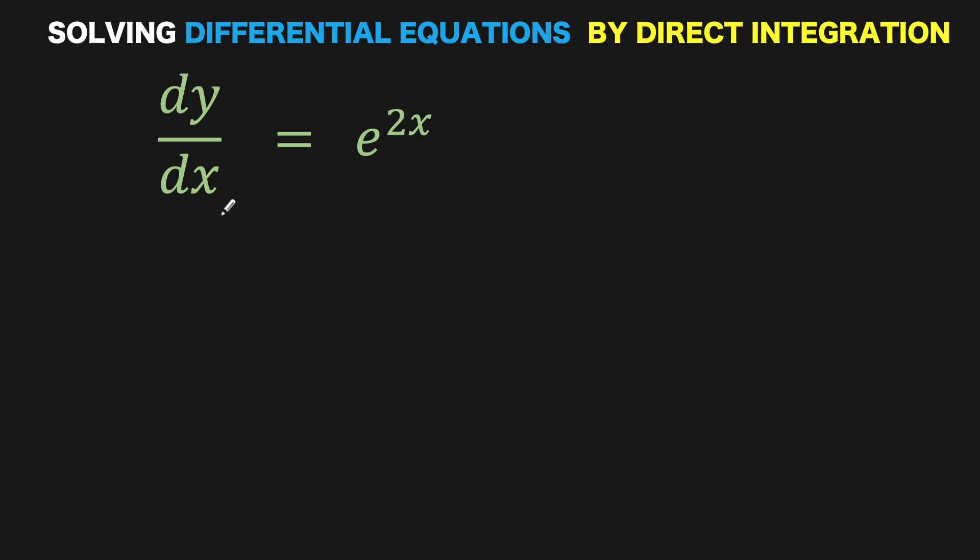Based on our discussion in our previous lesson, we said that if the form of the differential equation has the derivative equal to a function where the right side only contains the independent variable, then we can solve this by direct integration. So we now take the integral of both sides of the equation.